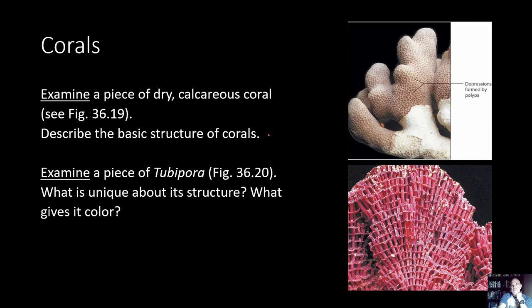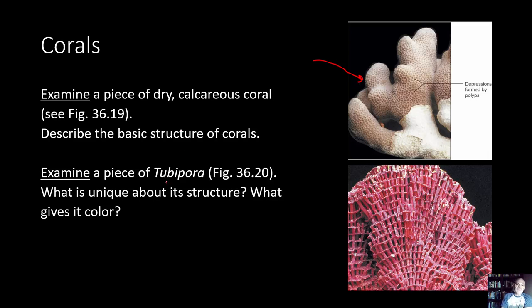Corals are tiny polyps in class Anthozoa that secrete a calcareous skeleton around themselves, forming large colonial calcium-based reef structures. Each depression in live coral contains a feeding polyp. Corals have no medusa stage. An interesting representative is Tubipora, the pipe organ coral, named because its exoskeleton looks like the pipes of a pipe organ instrument.